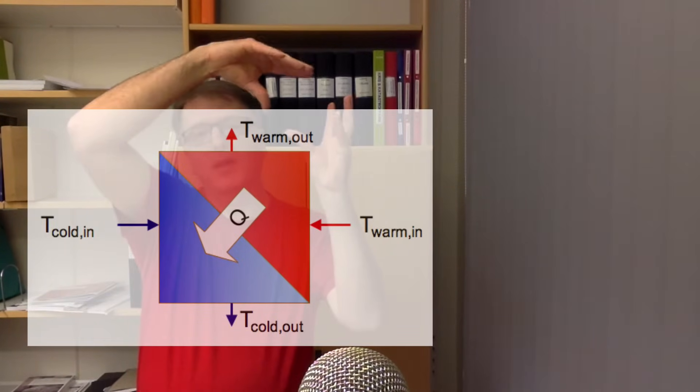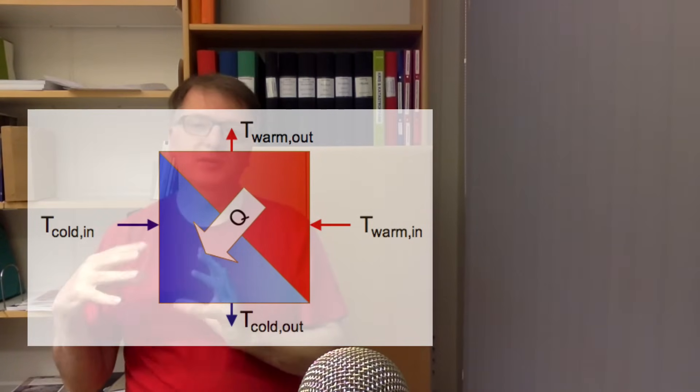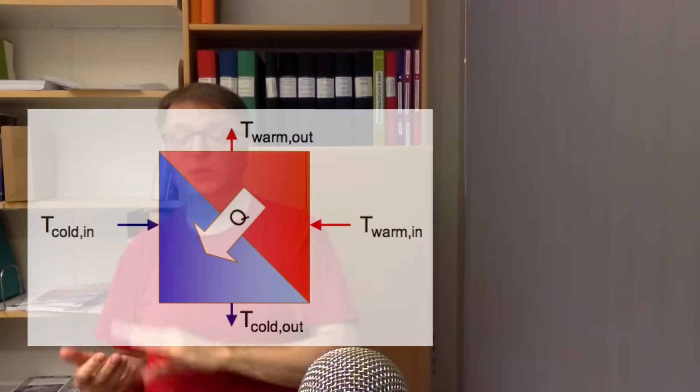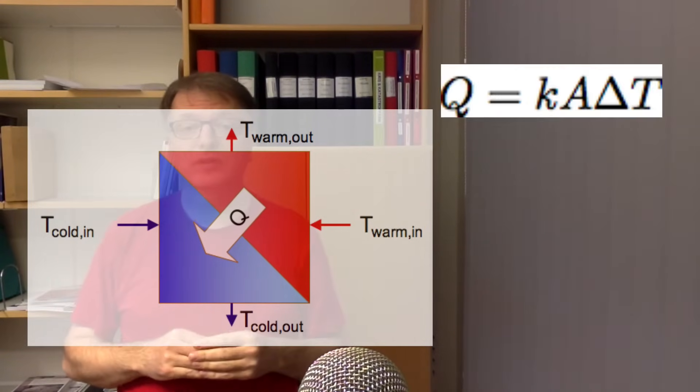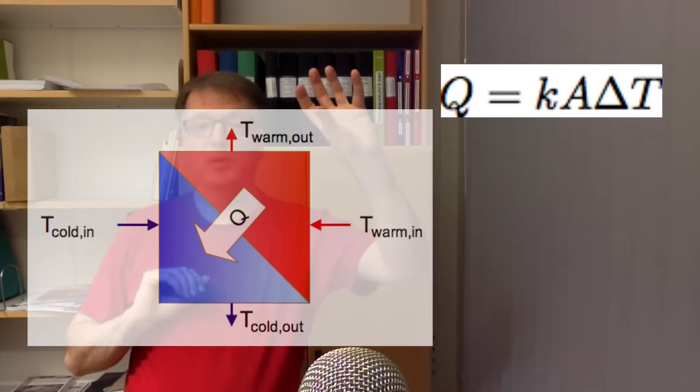Regarding heat transfer coefficients, in this course we will assume one overall heat transfer coefficient, but in reality it might vary along the heat exchanger. To calculate surface area, you make an energy balance: heat flows from the hot medium through the wall into the cold medium. Assuming no heat losses, the energy transferred through the wall equals the overall heat transfer coefficient (k) times the area times the temperature difference between the hot and cold media.